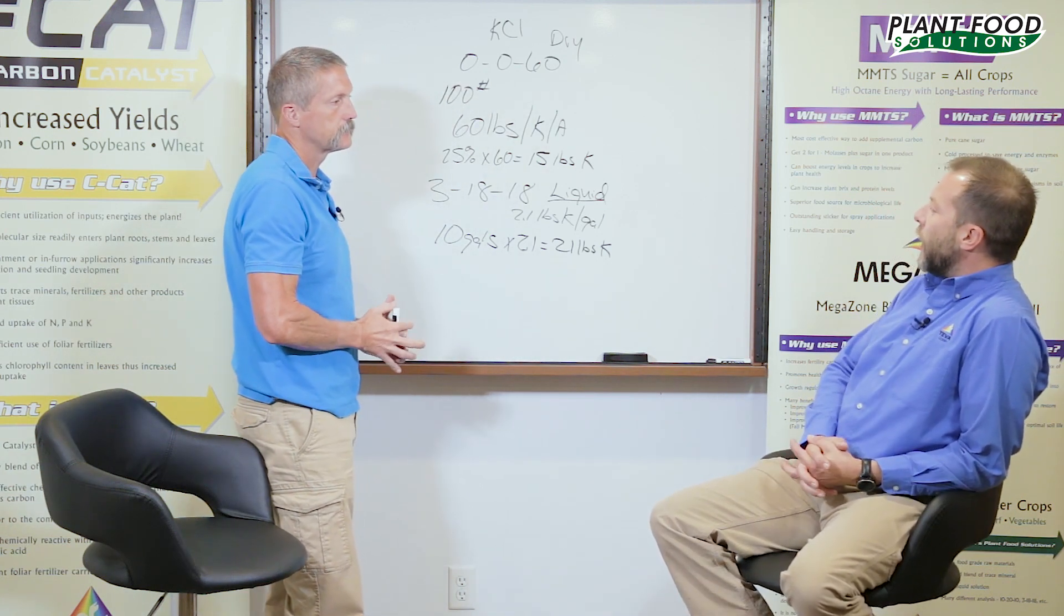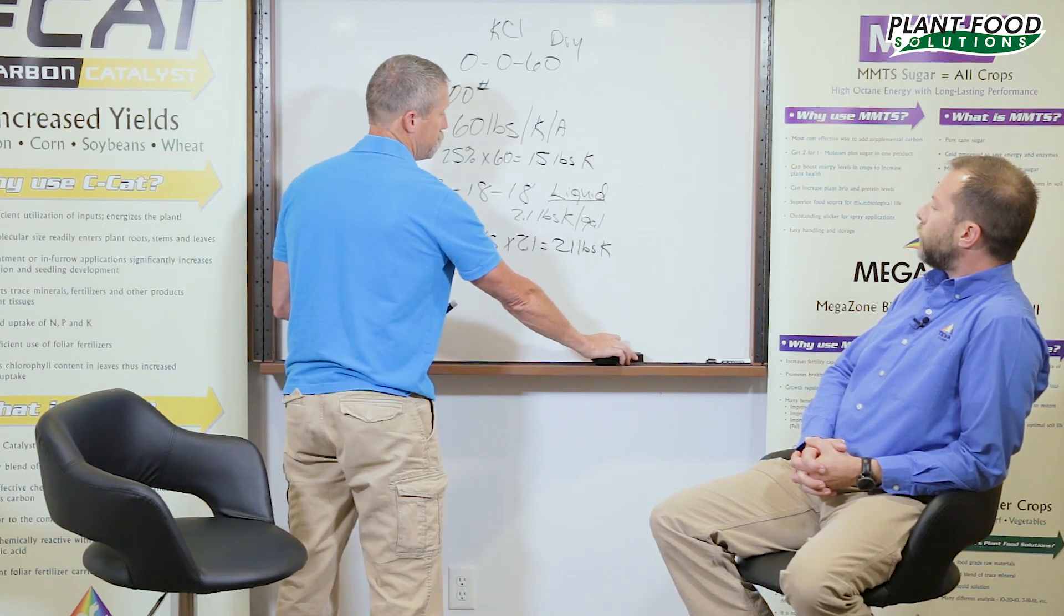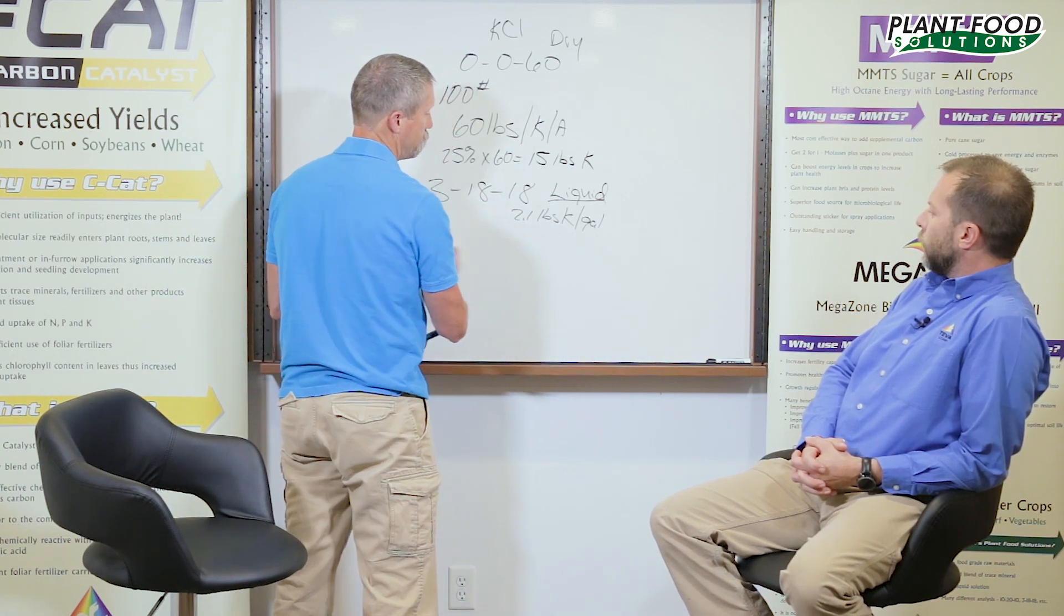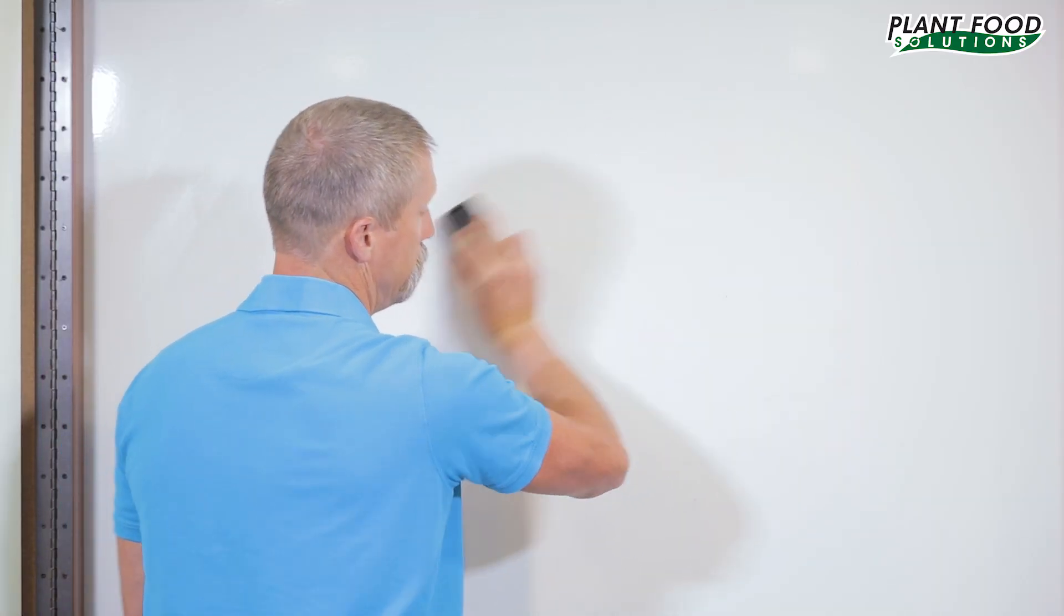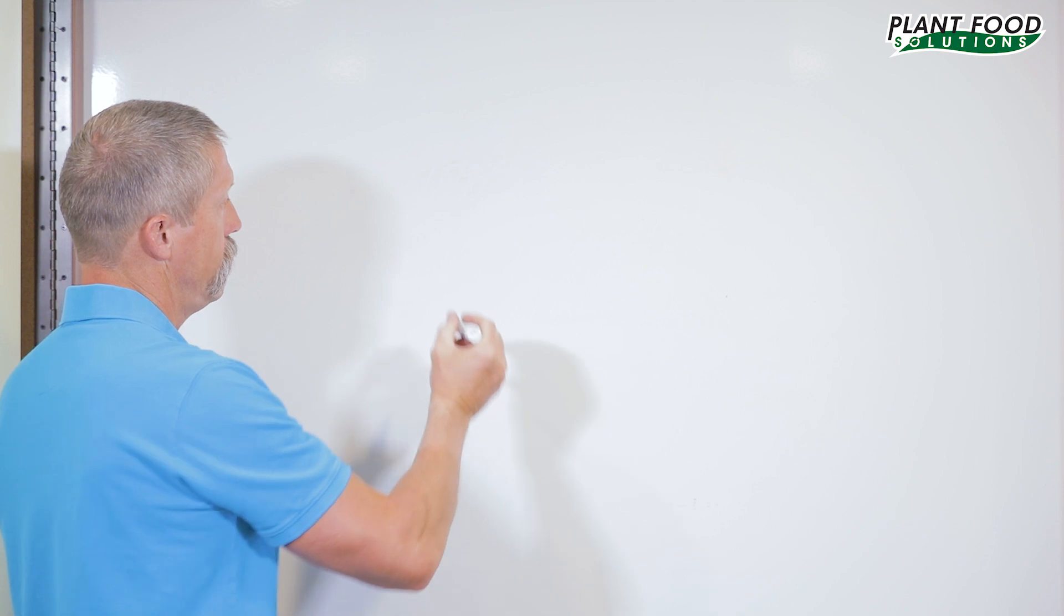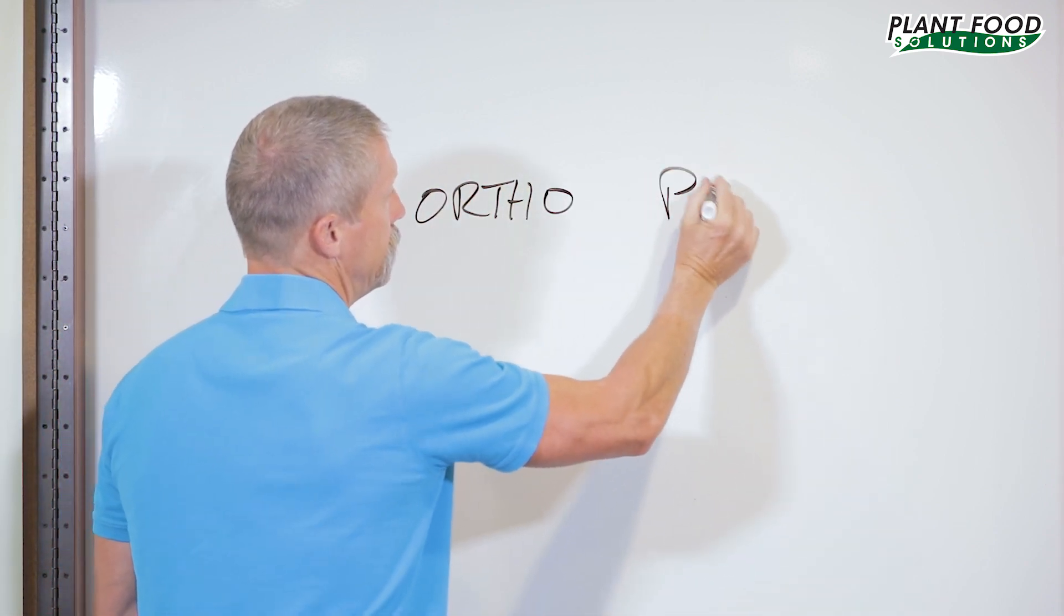It sounds like you're eliminating a lot of the unknowns by using the liquid. That was potash. What about the phosphate portion of your fertility? The phosphate is very similar. You want to look at the different forms out there and you have orthophosphate and you have polyphosphate.